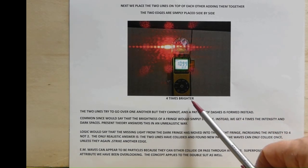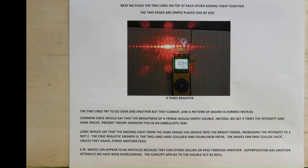Four times brighter. The two lines try to go over another but they cannot and a pattern of dashes is formed instead. Common sense would say that the brightness of a fringe would simply double. Instead, we get four times the intensity and dark spaces. Present theory answers this in an unrealistic way. Logic would say that the missing light from the dark fringe has moved into the bright fringe, increasing the intensity to four, not two.